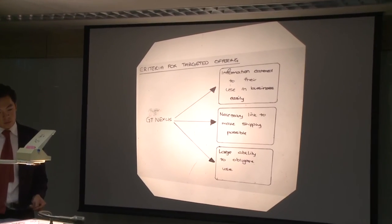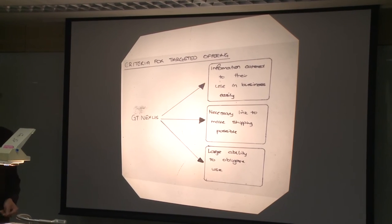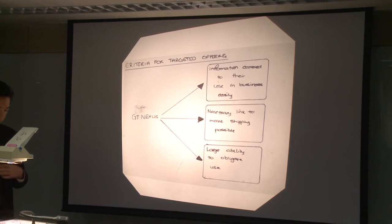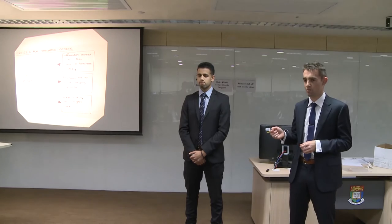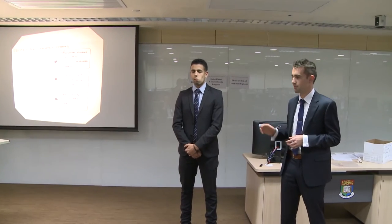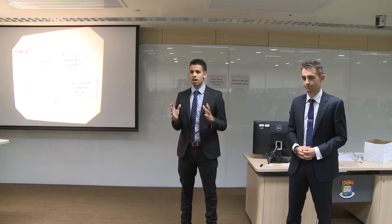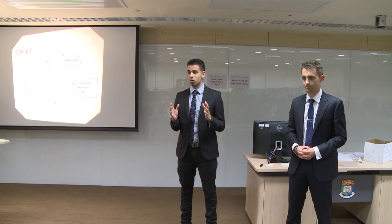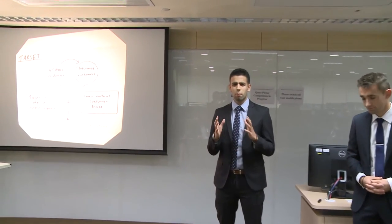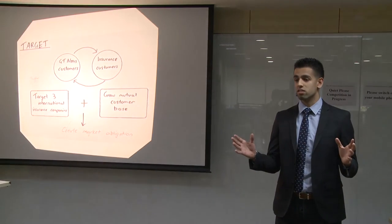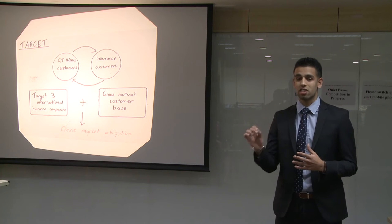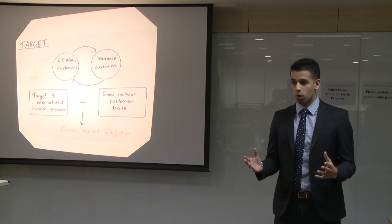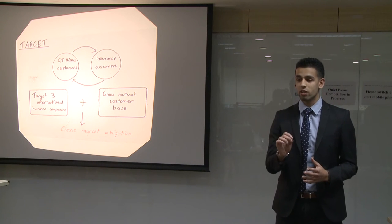Our first strategy, Target, has a couple of key criteria. Firstly, we look to businesses which have a need for the information we provide. Secondly, we look to those links which really make a difference and have an ability to obligate shippers to use GTX. Target proposes that rather than trying to become a third choice, you need to become the company that businesses are obliged to go with. The reason for this is firstly, the market you operate in is drastically filled with competitors, and secondly, the cloud system is extremely homogenous, making it difficult to gain customers through differentiation alone.